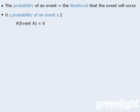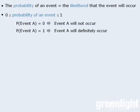If the probability of an event is 0, then that event will not occur. Conversely, if the probability of an event is 1, then that event will definitely occur.